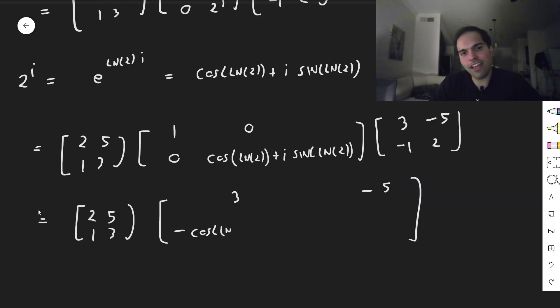Cosine of ln of 2 minus i sine of ln of 2, and believe it or not, I should have done that bigger, so minus 5, so minus 5, and then, so 0 and then 2, cosine of ln of 2.